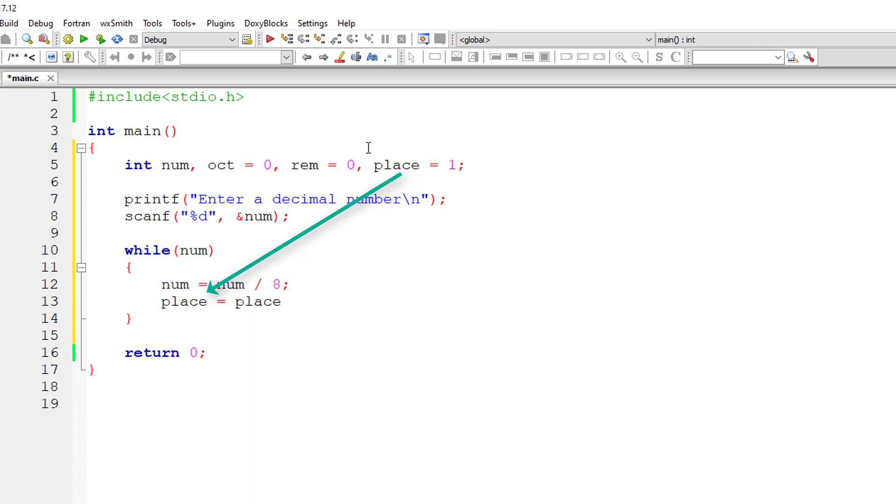Now place, I'll increment the place from units place to tens place. For next iteration it will go to hundreds place, etc. So the remainder equals num modulo division 8. Now octal equals octal plus remainder times the place. So that's it, very simple logic.